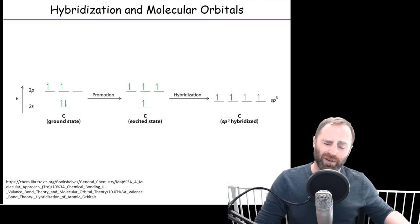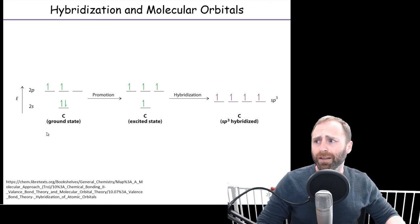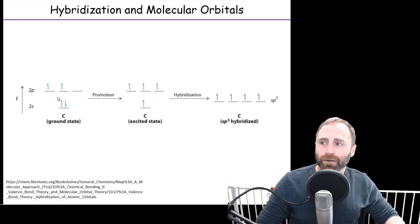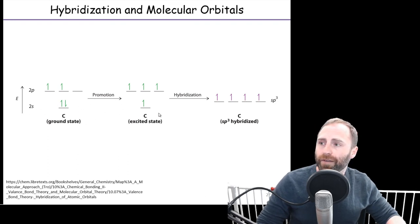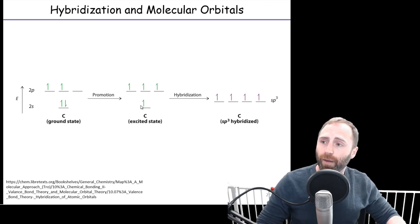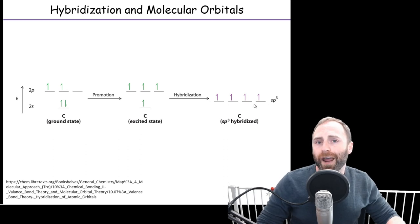We talked in our atomic structure chapter about energy diagrams. If we draw out the ground state electron configuration for carbon, it's 2s² 2p². Here are our 2s orbitals with two electrons, and here are our 2p orbitals. We only had two electrons there. In order to form hybridized orbitals, we first have to promote one of our electrons from the 2s up to an excited state so that we have a single electron in every single one of our atomic orbitals.